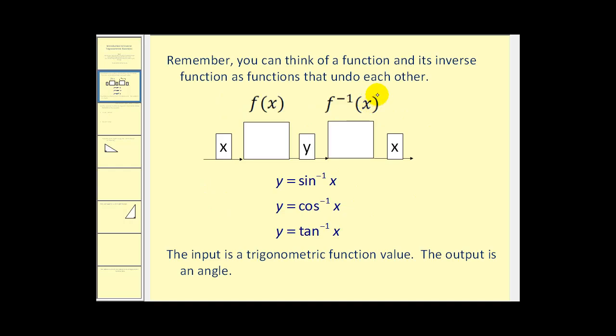Remember, you can think of a function and its inverse function as two functions that undo each other. Here's an illustration of this. Let's say we have this function f and x is the input and y is the output. Well, the output of f becomes the input of f inverse, and f inverse outputs x, so what we see here is whatever we start with, we end up with the same thing if these two functions are inverses of one another.